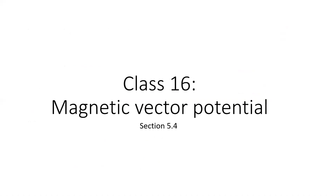Hello and welcome to class 16 of Physics 350 on the Magnetic Vector Potential. This covers section 5.4 of the textbook. The Magnetic Vector Potential is the magnetic analog to the electric potential, but as the name suggests, instead of being a regular number, a scalar, it's going to be a vector.